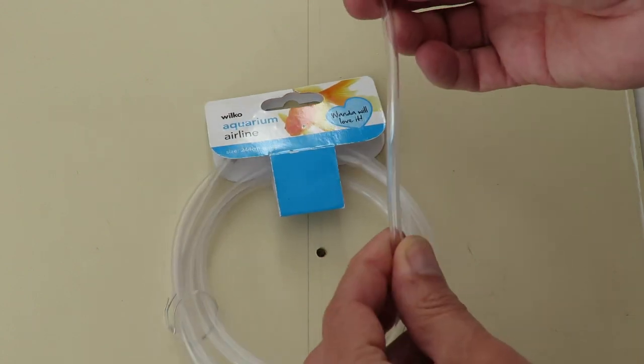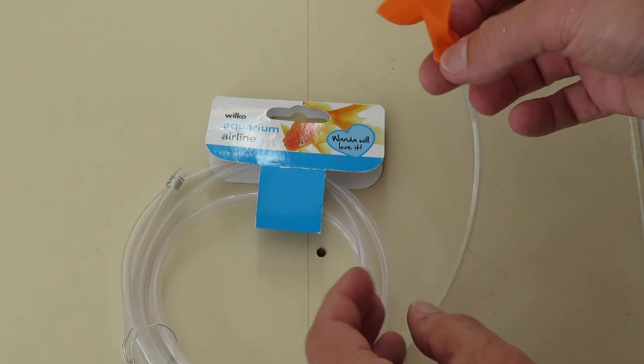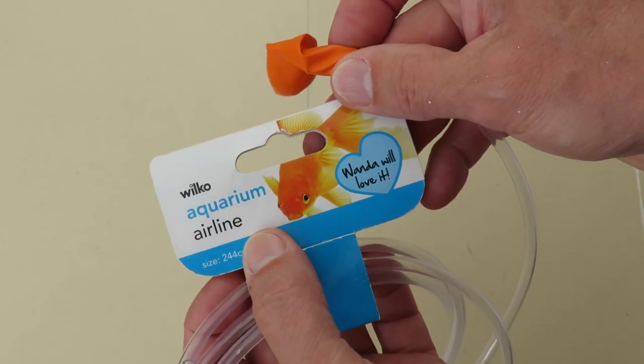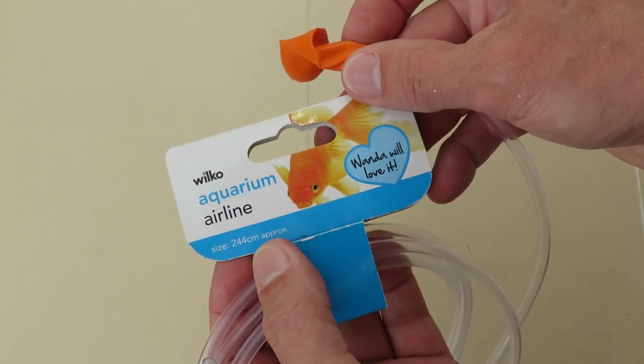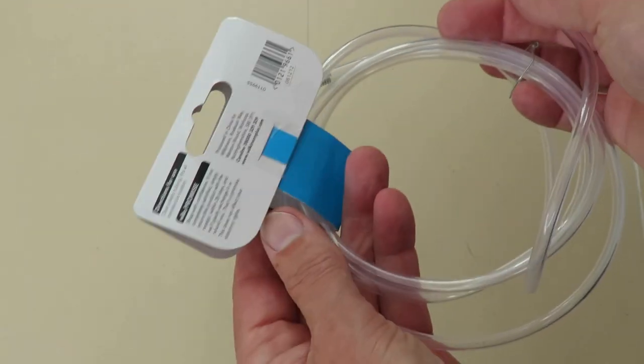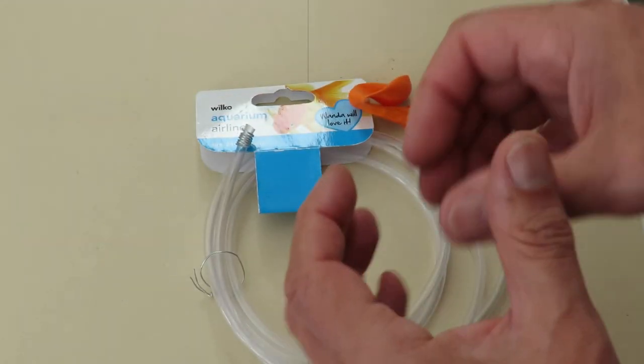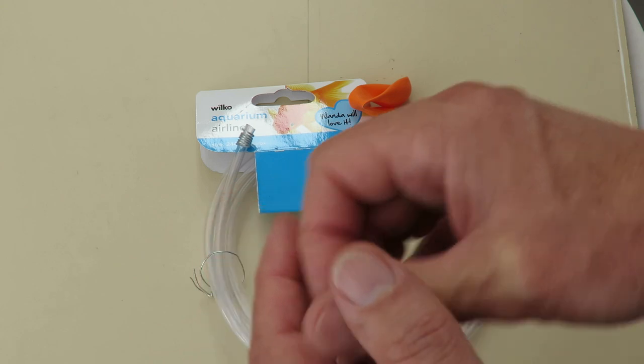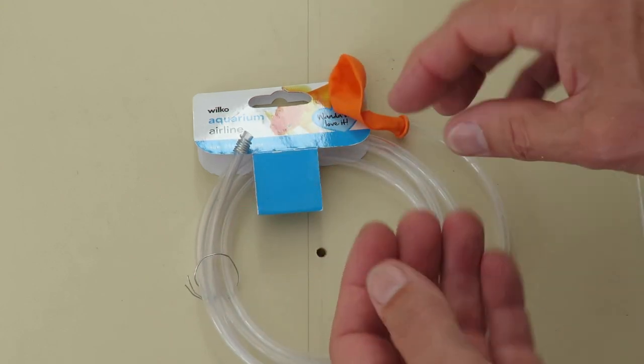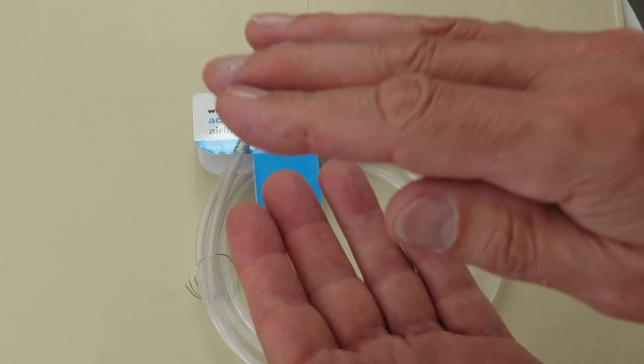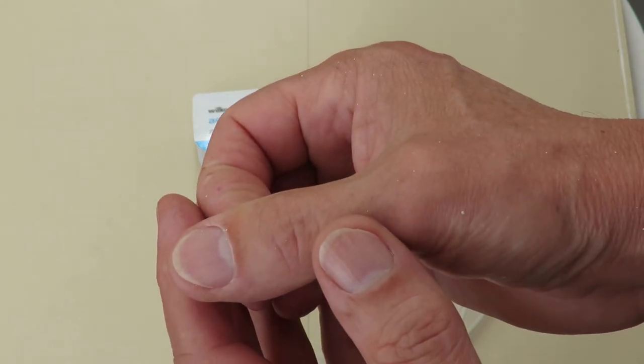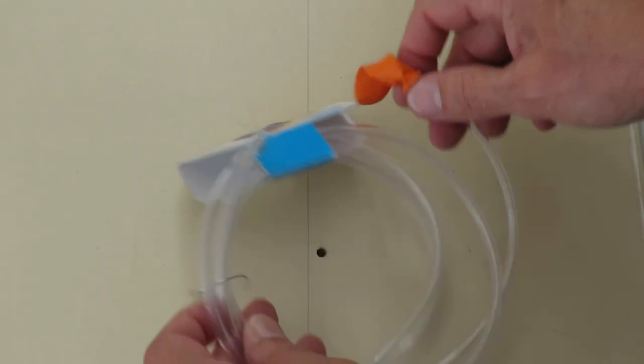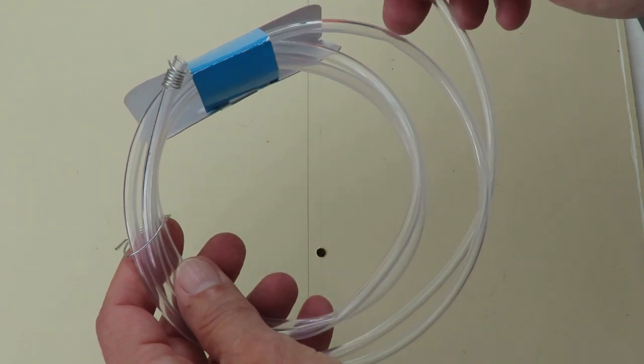I don't know if that's the right sort of thickness tubing, that's just what I had in the drawer. I must have bought it quite a while ago at Wilco, aquarium airline. I've got some much thicker tubing, but I'm looking at how much air pressure will move the water. On a really thick tube then the distance it moves is going to be a tiny amount. On a thinner tube it's going to push it much further so it should be noticeable.